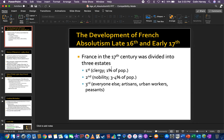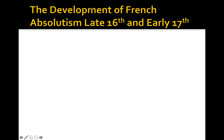Hey everyone, what's going on? Mr. Harvey here. Let's continue our lecture. We're on chapter 5 and we are talking about absolutism. In the previous lecture, I gave a general overview of absolutism — the intellectual basis, justifications, and characteristics. Today I really want to give an example and discuss the development of the best example of absolutism within Western Europe: French absolutism.